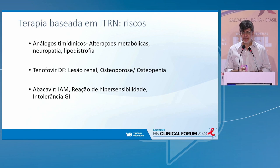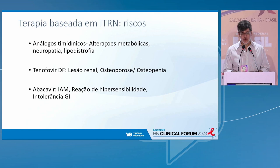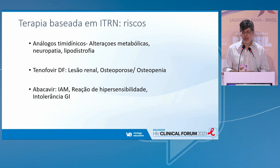Tenofovir DF started to show its limitations, particularly regarding renal injury and osteopenia. Abacavir is a drug that also showed problems — for 15 years we realized that abacavir could be associated with higher cardiovascular risk.